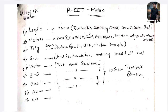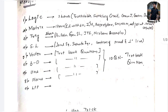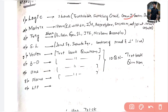First, we have the logic part — you have to spend about one hour to learn this. In the logic part, you have truth tables, switching circuits, converse, inverse, contrapositive, and dual. Other than this, you need to study formulas like De Morgan's law, distributive law, and commutative law. If you study these, you can score one mark easily.